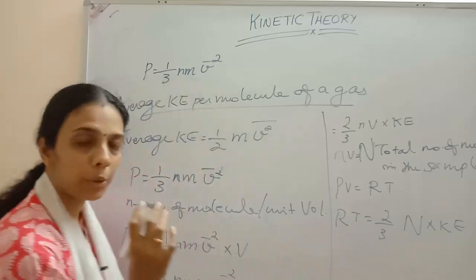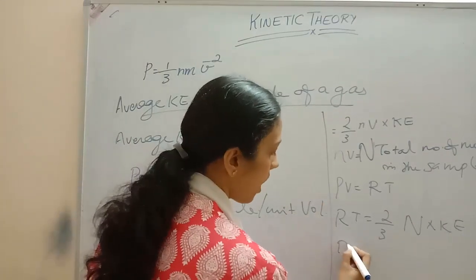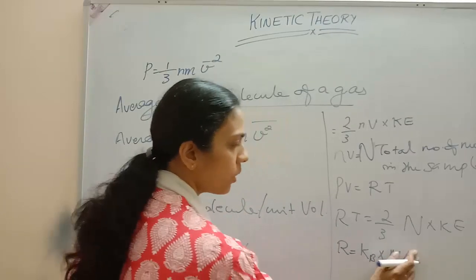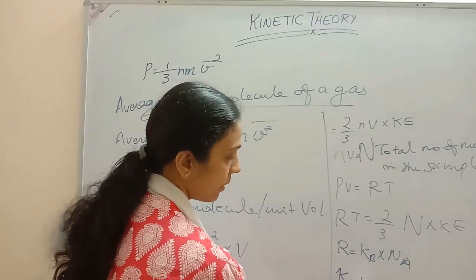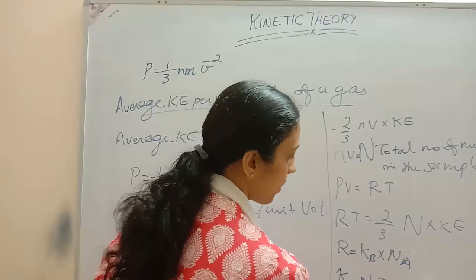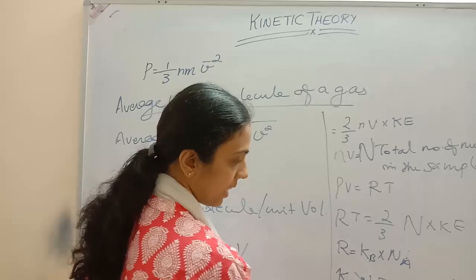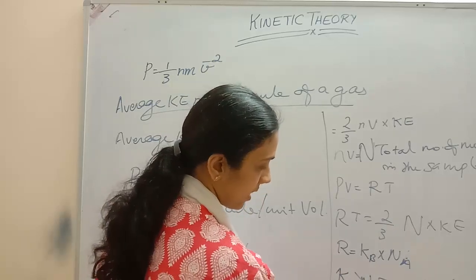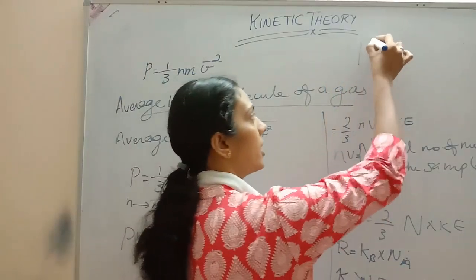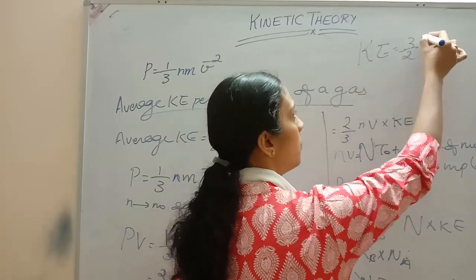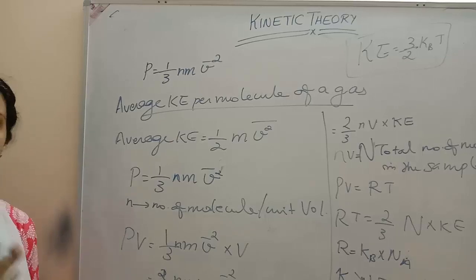Now, R = k_B × N_A (Boltzmann constant times Avogadro's number), which we learned in the previous video. Substituting, we get k_B·N·T = (2/3)·N·KE. The N's cancel, giving us kinetic energy = (3/2)k_B·T. So the average kinetic energy per molecule of a gas is (3/2)k_B·T.